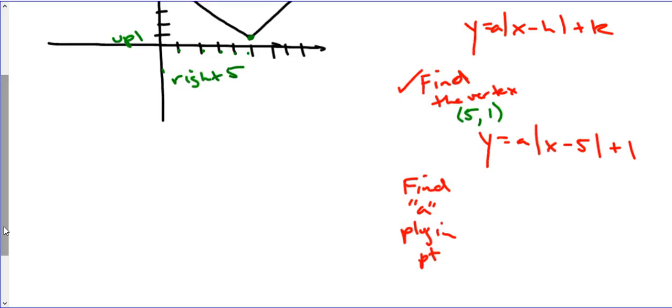By doing so, I'm going to take this and plug in that point 2, 4. So we're going to have 4 equals A times the absolute value of 2 minus 5 plus 1. We're going to subtract 1 and solve this.